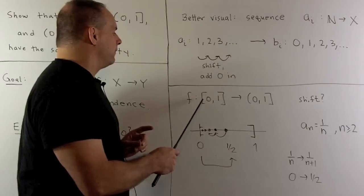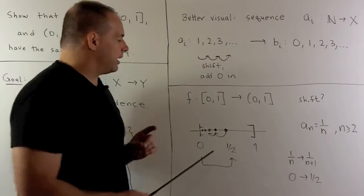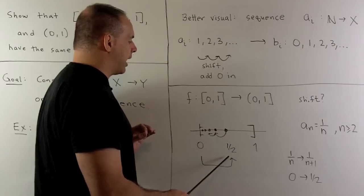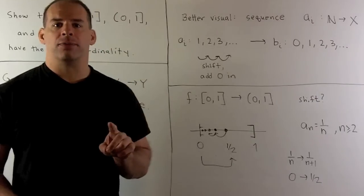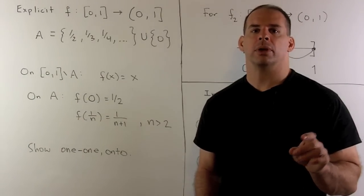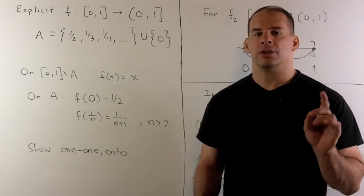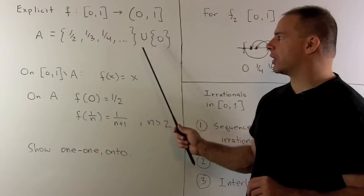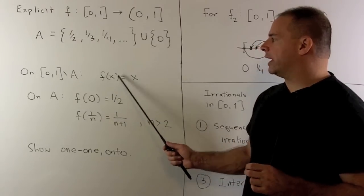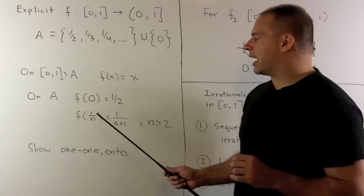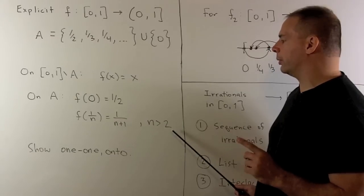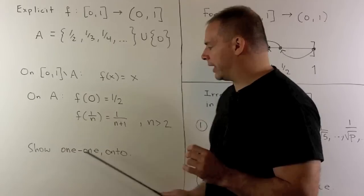The key idea is: to remove the 0 on the left, I shift each 1/n to 1/(n+1), then take 0 and stick it in at the 1/2 spot. All numbers are accounted for — 0 moves to 1/2. To describe f explicitly as a function, define A as the set {1/2, 1/3, 1/4, ...} union with the point 0. On the closed interval [0,1] minus A, send each point x to itself. On A, send 0 to 1/2, and send 1/n to 1/(n+1) when n is strictly greater than 2. I'll leave it to you to show that f is one-to-one and onto.